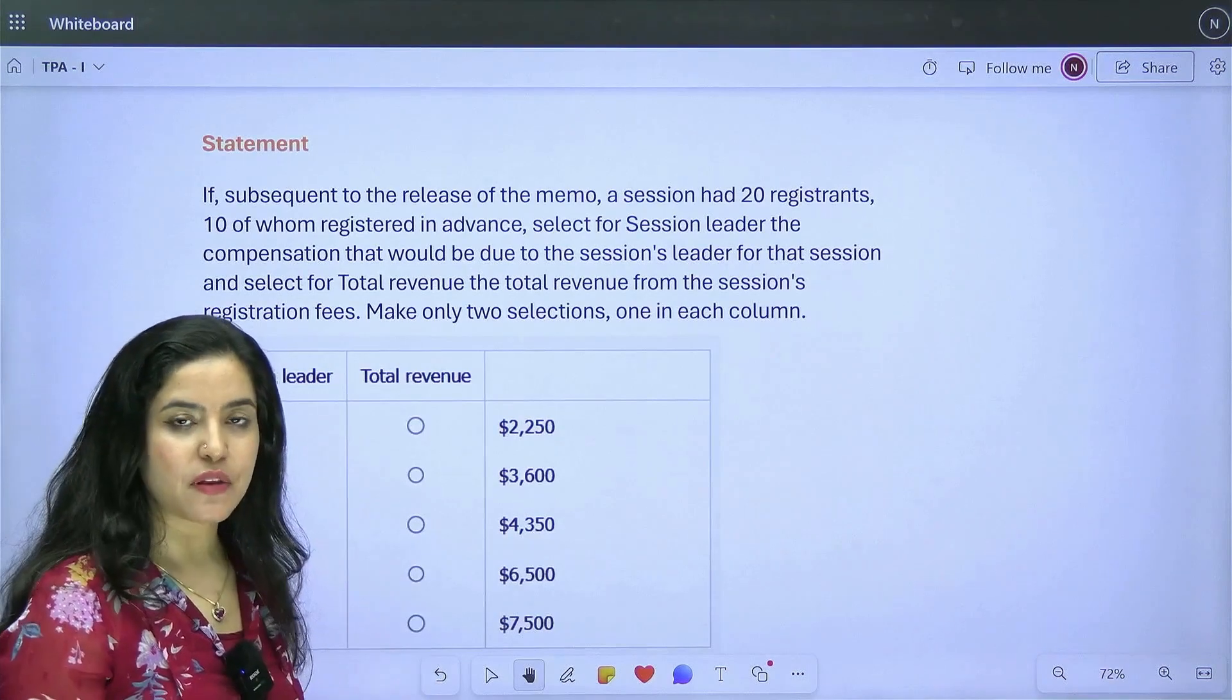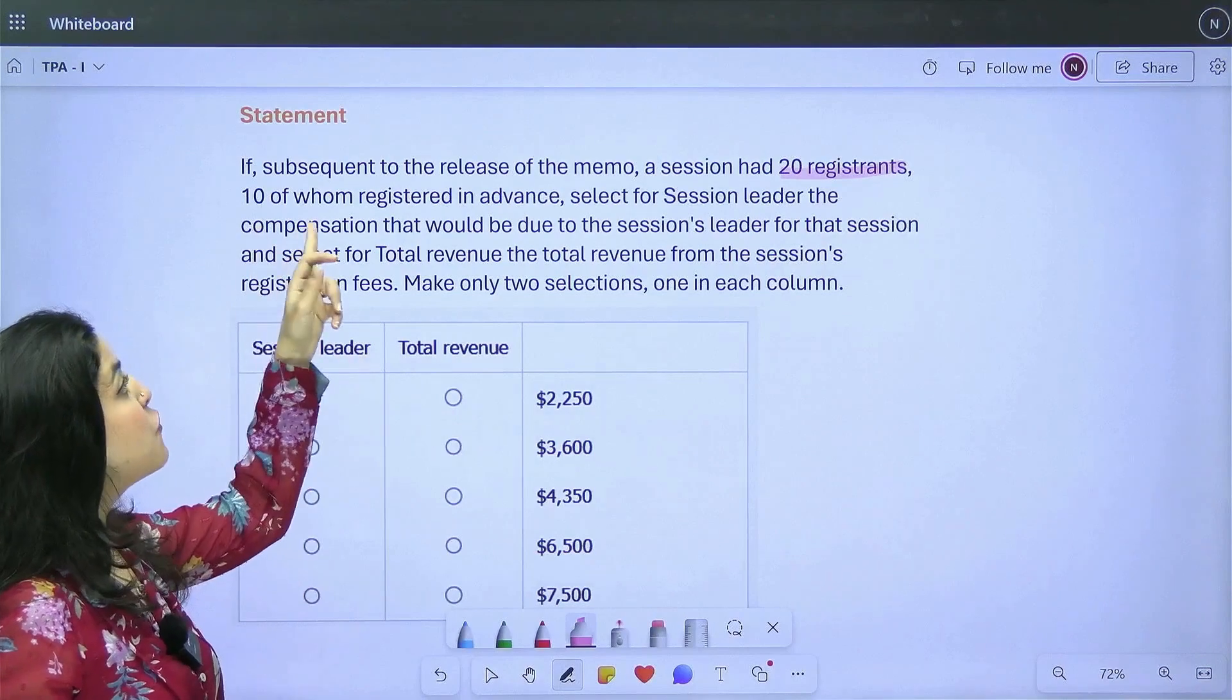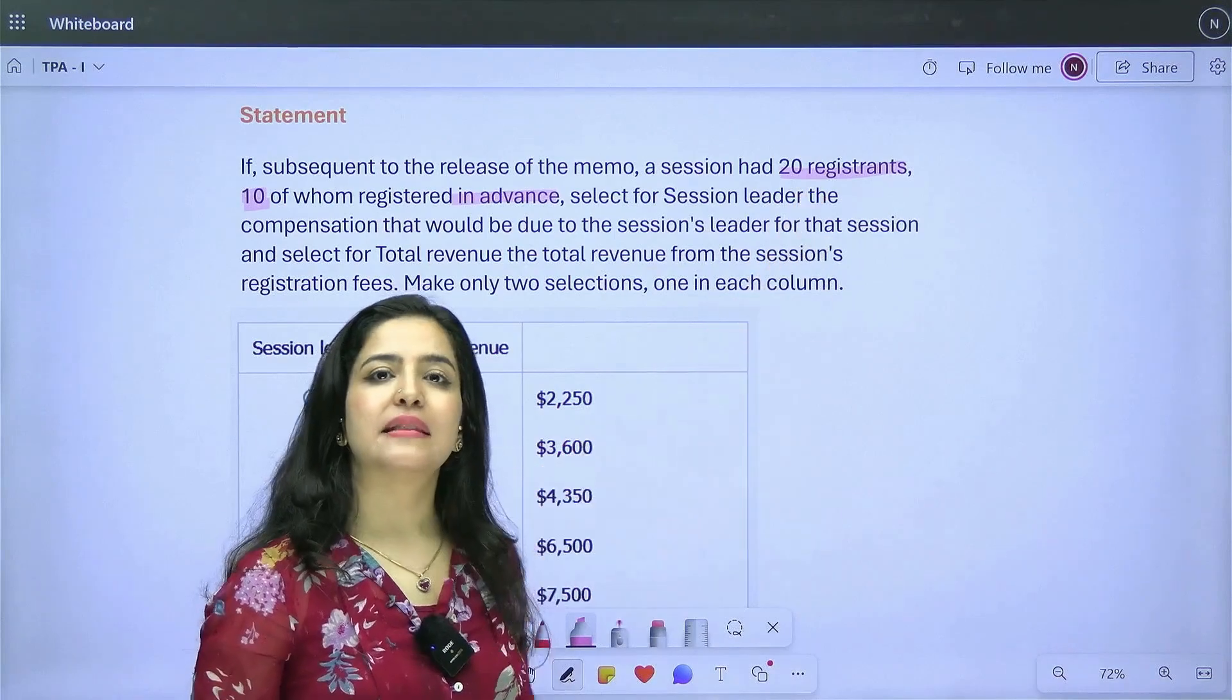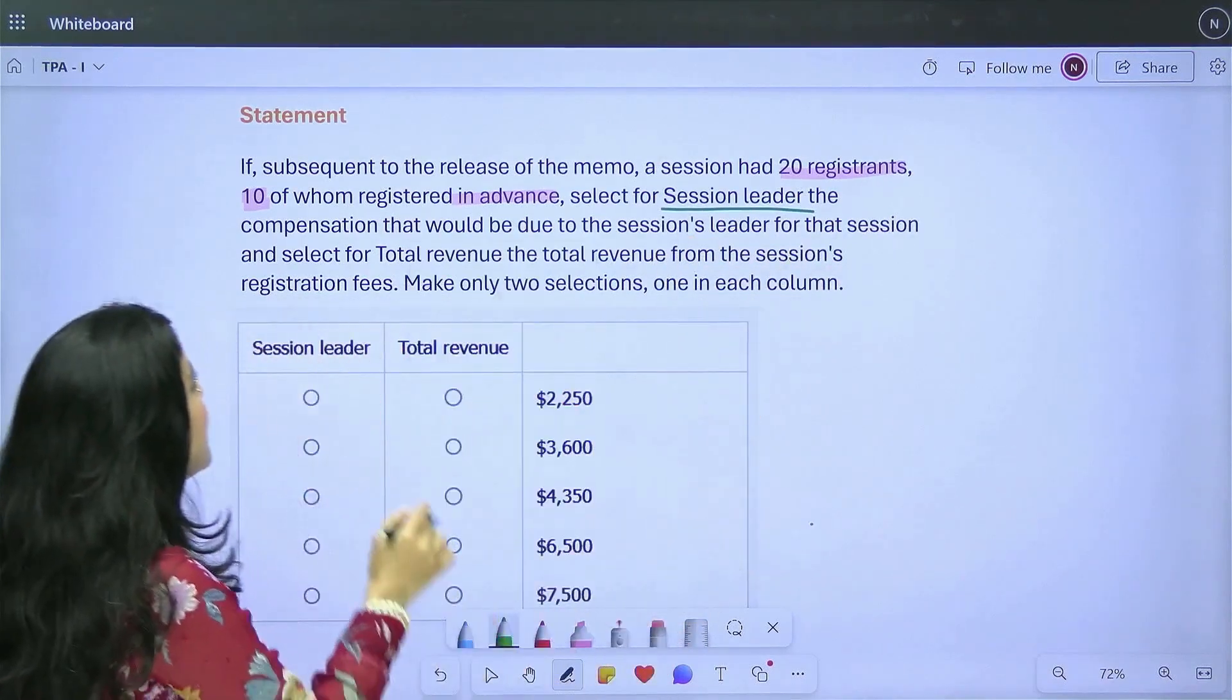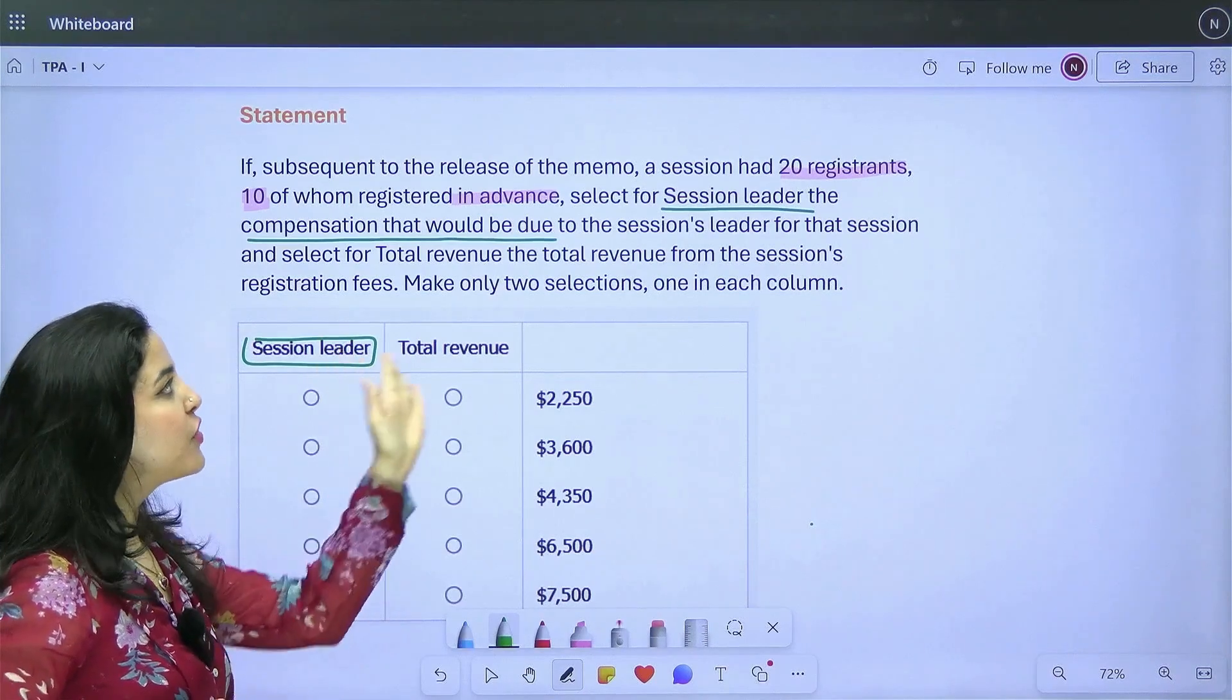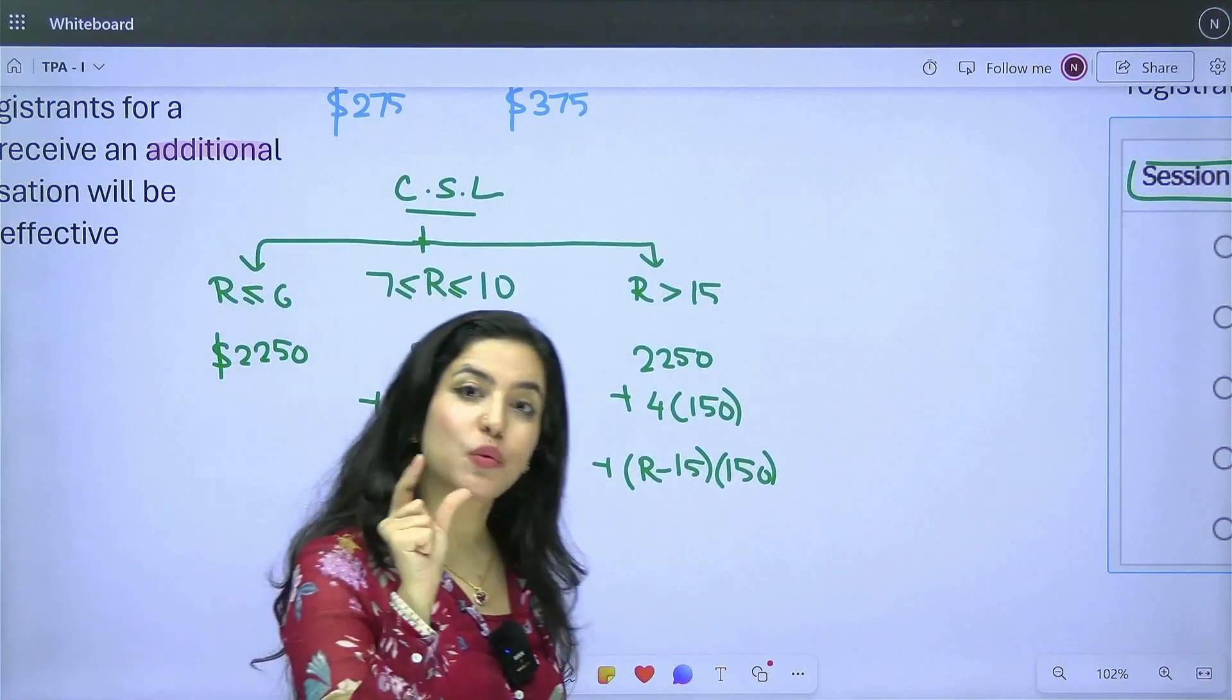Let's read this together. It says subsequent to the release of the memo, after this has been released, there is a certain session that had 20 registrants. So, I know the number of registrants now. 10 of whom registered in advance. Why is it telling me this? Because you know the registration fees varies based on when you register. That means if 10 registered in advance out of 20, then the remaining 10 did not register in advance. Select for session leader, which means select for this first column. What do you select? The compensation that would be due to the session leader for that session.